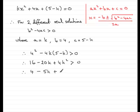And 4k squared divided by 4, that's going to be k squared. And don't forget, 0 divided by 4 still is 0.